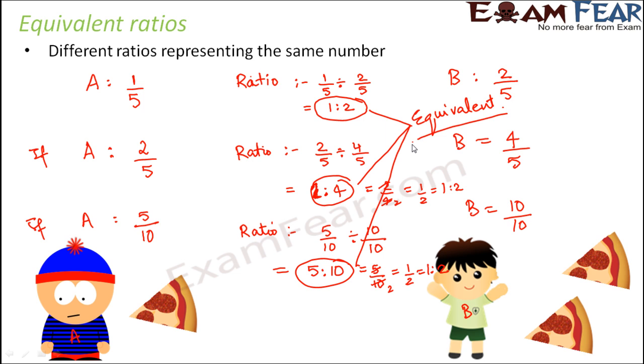Now looking at this example, can you tell me how we're getting these equivalent ratios? Let's say if you have 1 is to 2, if I ask you to make equivalent ratios of 1 is to 2...